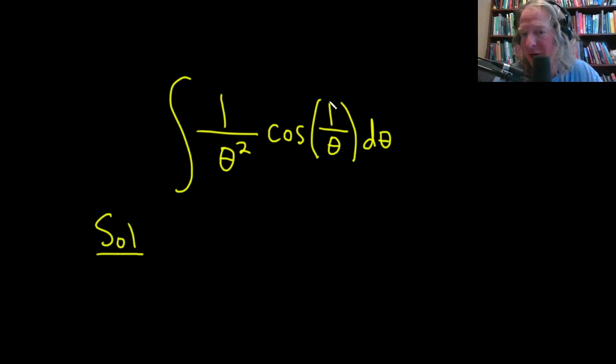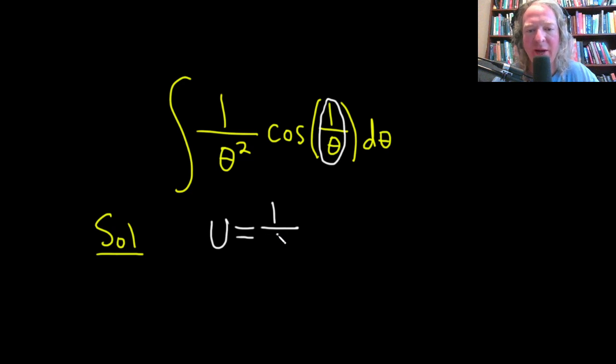You can just try something and hope it works. So we're going to let u be equal to the inside piece, the part inside the trig function. So we'll set u equal to 1 divided by theta.